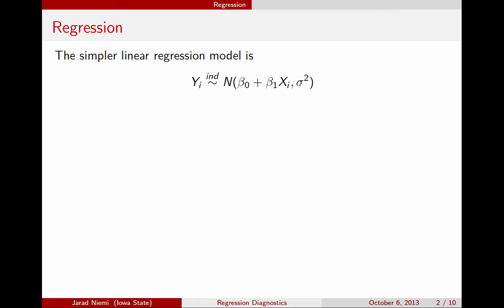Just as a reminder, the simple linear regression model is that your data are normally distributed and independent. The mean is given by a linear function of an explanatory variable xi, and after we've accounted for that mean line, the observations have a constant variance. We can rewrite this model where our data yi are equal to this linear function of the explanatory variable xi plus an error, where this error now is normally distributed, again independent, with mean 0 and a variance of sigma squared.